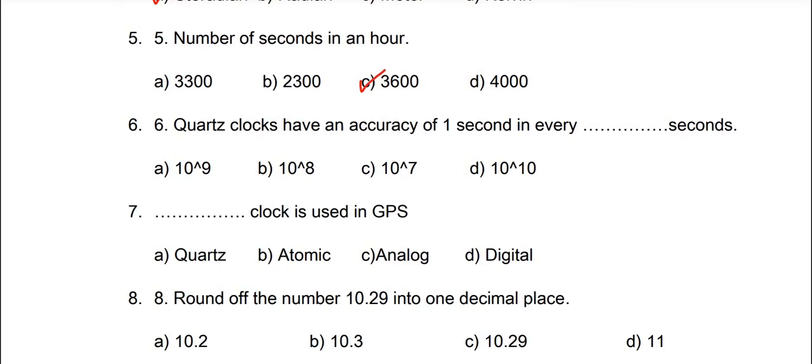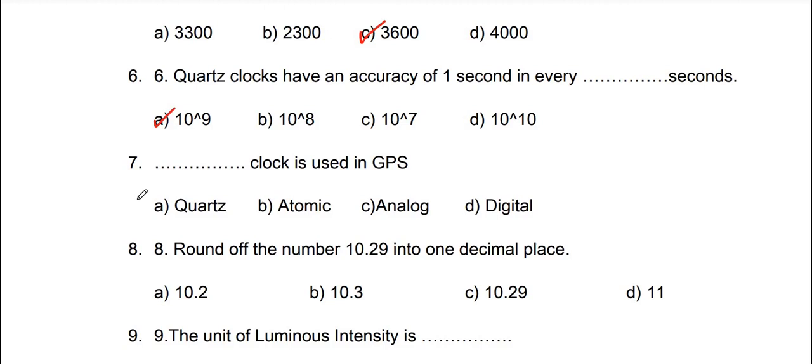Quartz clocks have an accuracy of 1 second in every 10 to the power 9 seconds. Seventh one, dash clock is used in GPS, GPS lairukk, atomic clock.